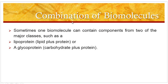Now, the combinations of biomolecules. Sometimes one biomolecule can contain components from two of the major classes, such as lipoproteins — which consist of lipids plus proteins — or a glycoprotein — which consists of carbohydrates plus proteins. So biomolecules can also exist in a combination form.